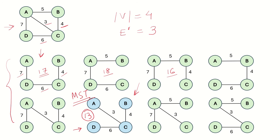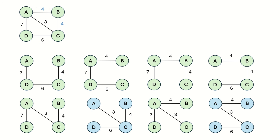When the weights are distinct, we have a unique MST. But if the weights are not distinct — say the AB edge also has weight 4 and BC also has weight 4 — then the MST is not unique. In that case, this spanning tree has a cost of 13 and another spanning tree also has a cost of 13.